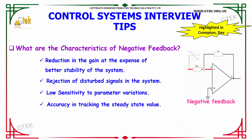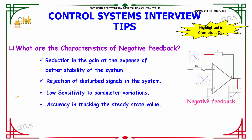What are the characteristics of negative feedback? The characteristics are: reduction in gain at the expense of better stability of the system; rejection of disturbance signals in the system; low sensitivity to parameter variations; and accuracy in tracking the steady state value. These are the characteristics of negative feedback.